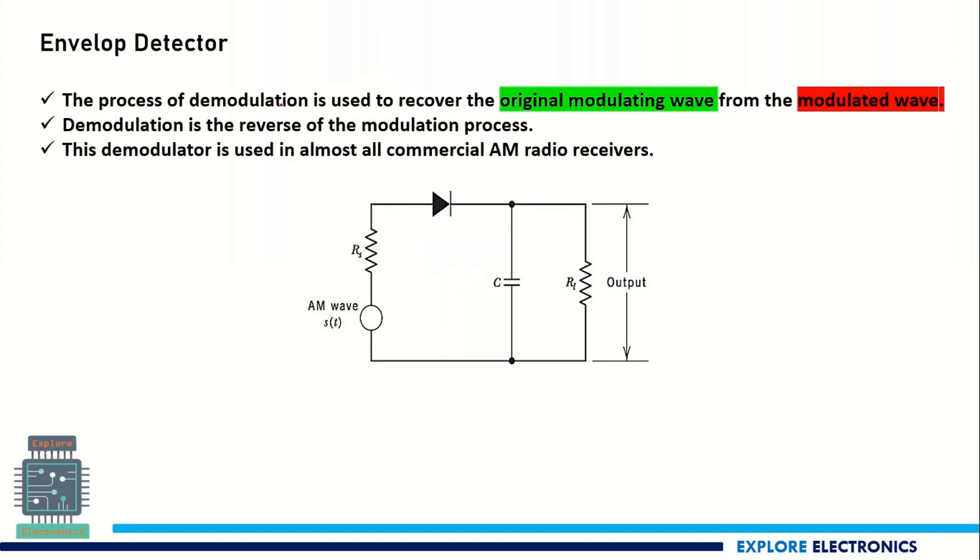The process of demodulation is used to recover the original modulating signal or the original message. The modulated signal that is transmitted and received at the receiver needs the demodulation process in the receiver. This receiver consists of an envelope detector. This envelope detector is going to detect the modulating signal and it will take out the information from the modulated wave.